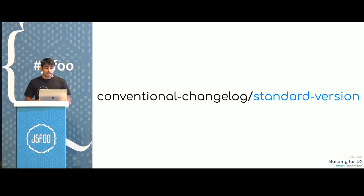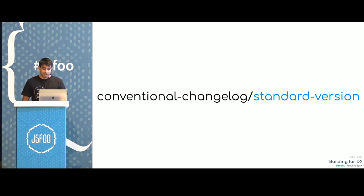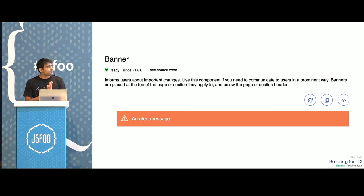A change can be a bug fix, a new feature, a component, documentation update, dependency update, or tooling configuration change — but one change per pull request. We started squashing pull requests and following the commit message guidelines provided by Semantic Commit Messaging. We got pretty decent changelogs, which were really helpful in adoption because people could know what was changing in a particular version and whether they needed to change in their applications.